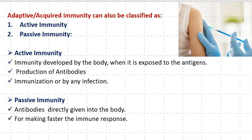Acquired immunity can also be classified as active immunity and passive immunity. For active immunity, it is the immunity developed by the body when it is exposed to antigens — antibodies are produced by the body, induced either by immunization or by infection. For passive immunity, it occurs when antibodies are directly given to the body, and it is used when the immune response needs to be faster.